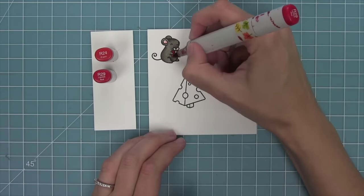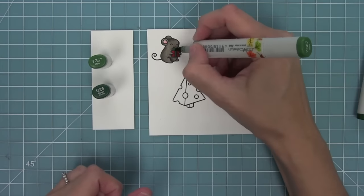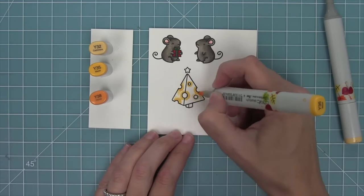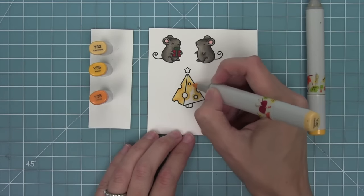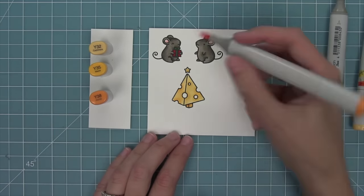I'm going to color in that little present there in some Christmas colors of red and green and then I'll be working on that cheese tree. I love Y32 and Y35 for the cheese tree because it looks like Swiss cheese. So I'm adding some shadow around all of those holes in the cheese and then blending that out with my lighter marker.